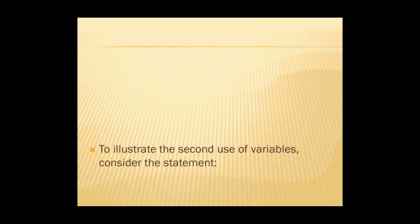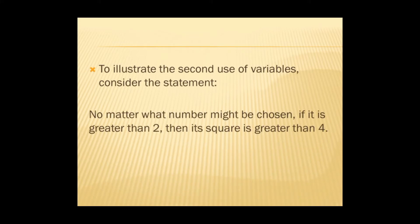To illustrate the second use of variables, consider the statement: no matter what number might be chosen, if it is greater than 2, then its square is greater than 4. In this case, introducing a variable to give a temporary name to the arbitrary number you might choose enables you to maintain the generality of the statement, and replacing all instances of the word 'it' by the name of the variable ensures that possible ambiguity is avoided.